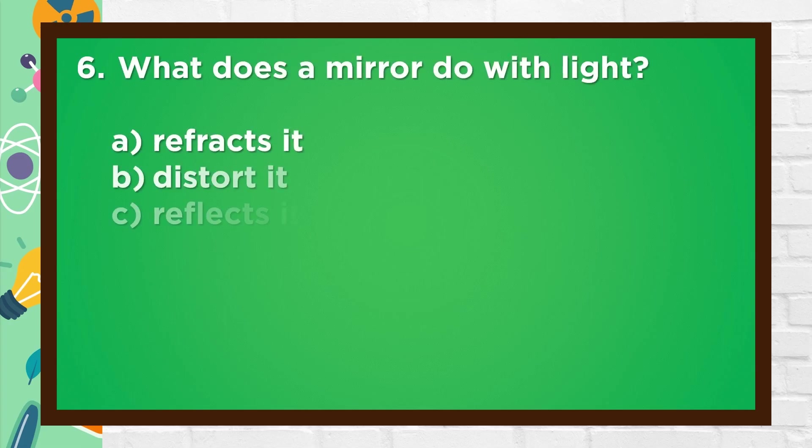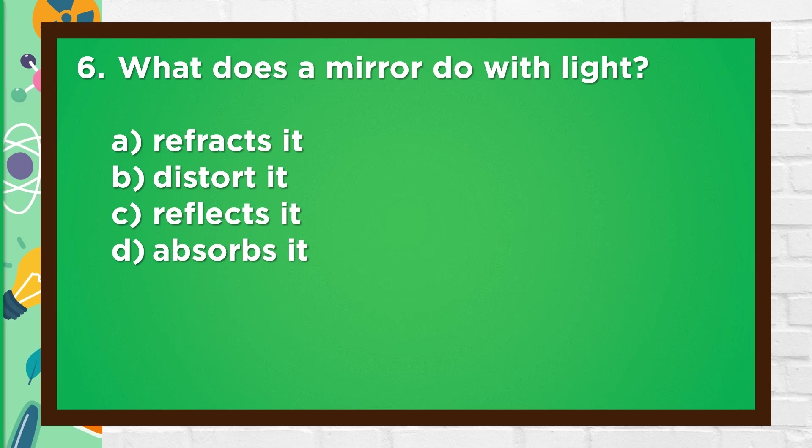Number 6. What does a mirror do with light? A. Refracts it, B. Distorts it, C. Reflects it, D. Absorbs it.